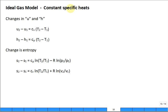If you have constant specific heats for an ideal gas, then if you want to know the change in internal energy or the change in enthalpy, it's just C_V times delta T or C_P times delta T. So it makes it really simple when you have constant specific heats.